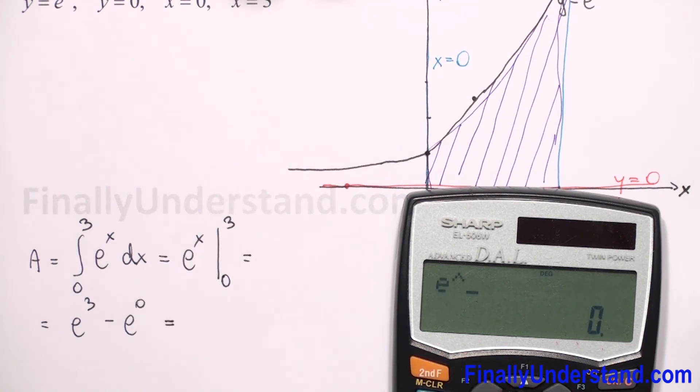We can use calculator. E to power three is equal to 20.08, and we have e to power zero is one, so we have minus one.